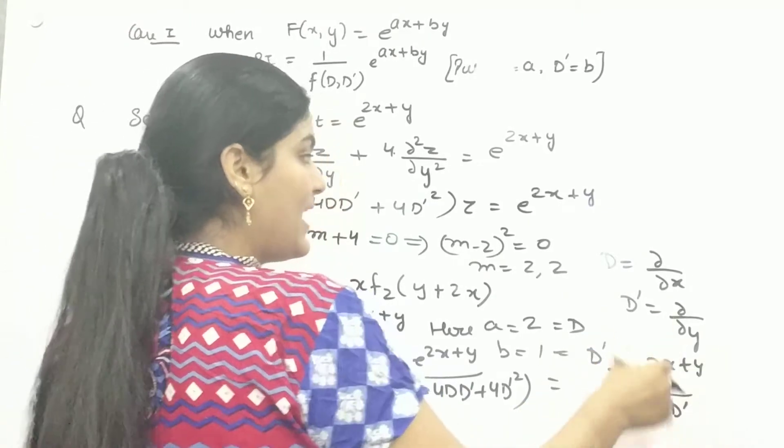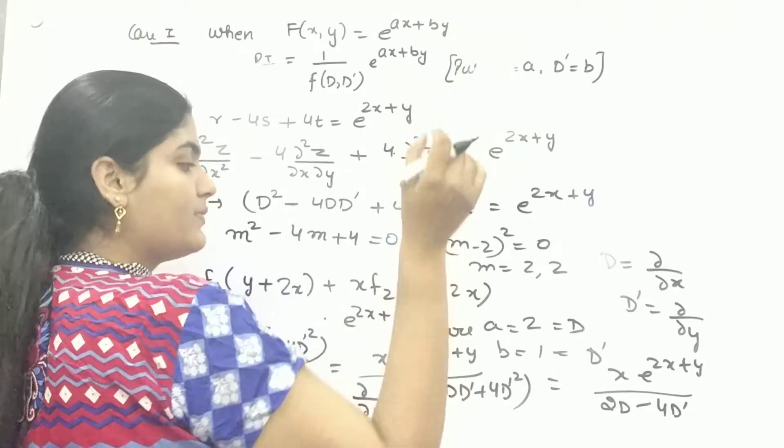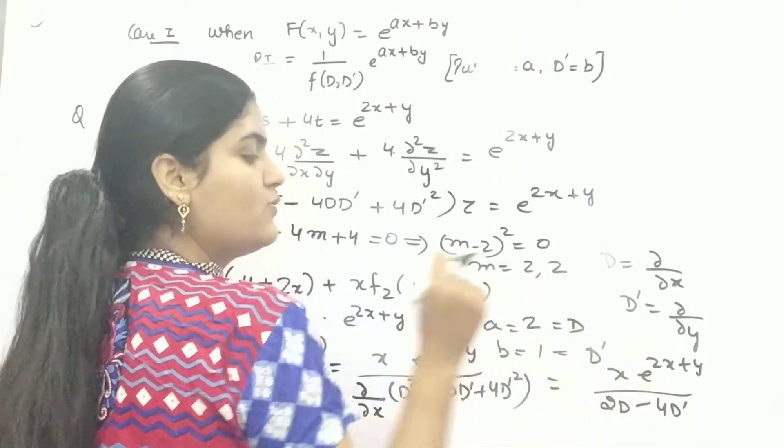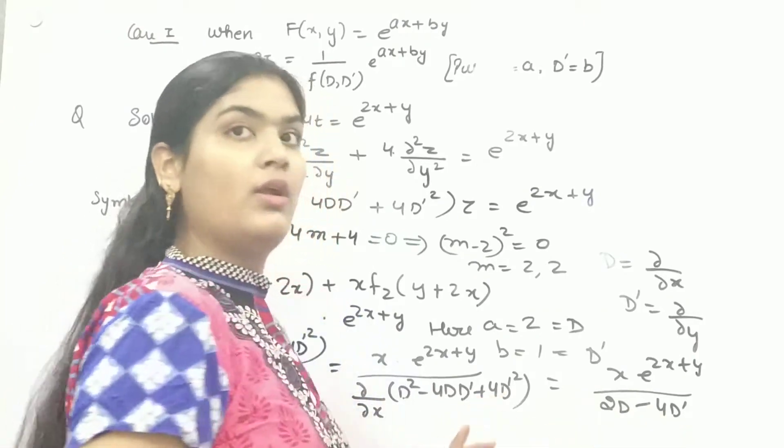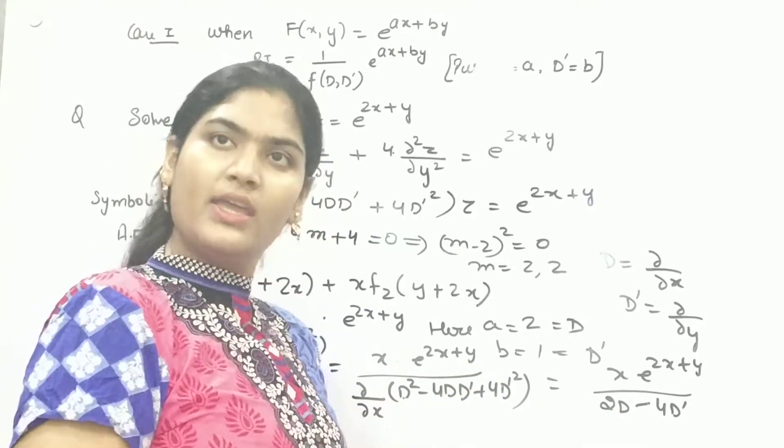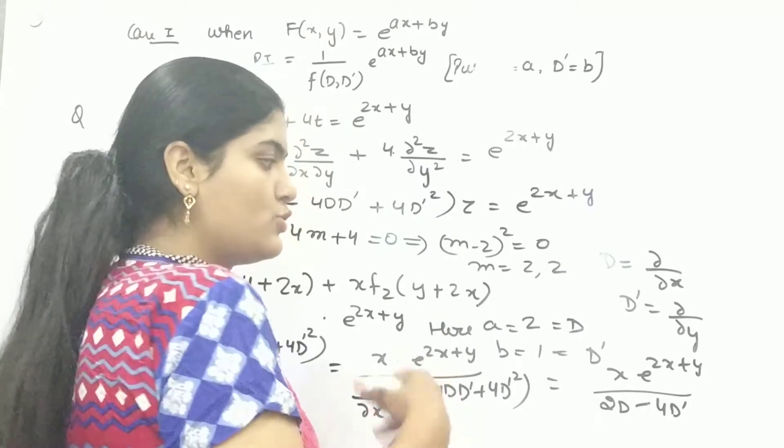Now again, apply the same formula. Here A is 2, B is 1. If you apply here, 2 times 2 is 4 minus 4 times 1 is 4. So 4 minus 4 is zero. Again, you are getting zero.